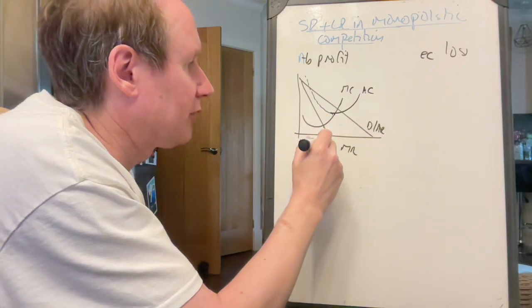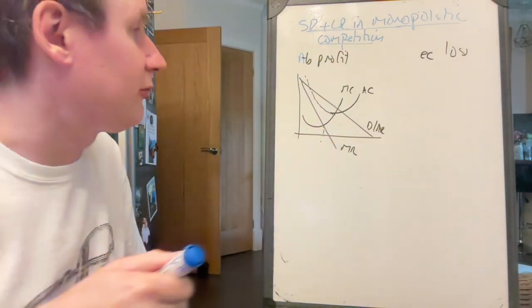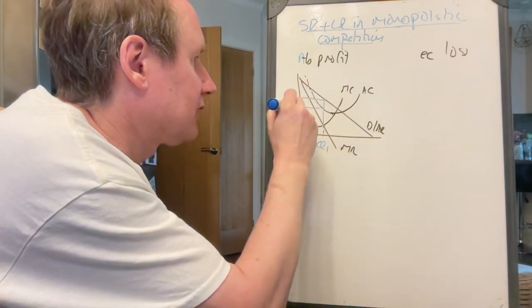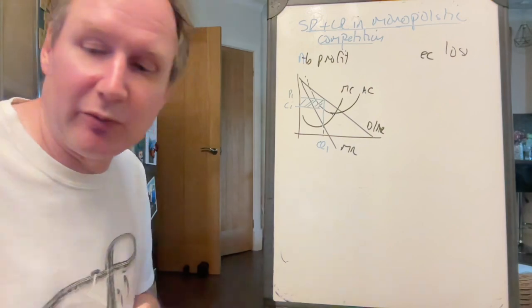Minimum point is where MC is. So now at the profit maximizing output of Q1, price is there, P1, cost is there, C1, and it's got abnormal profit.